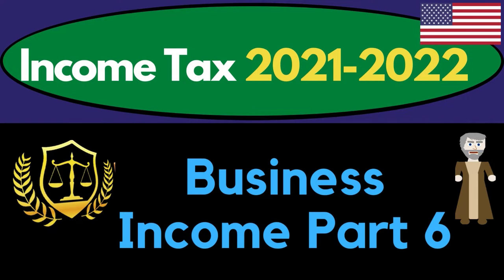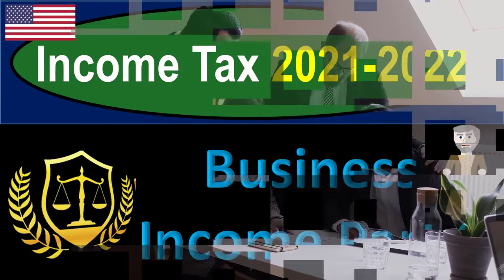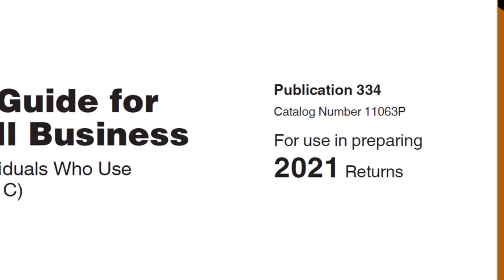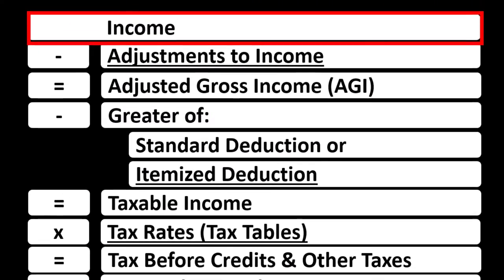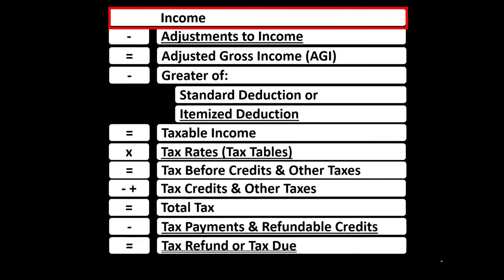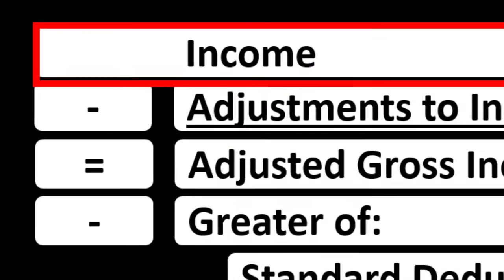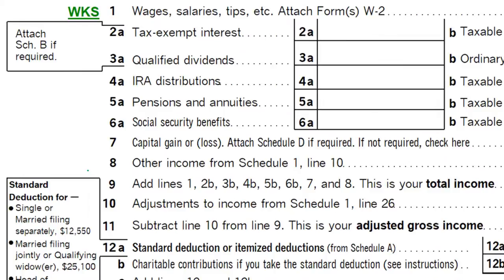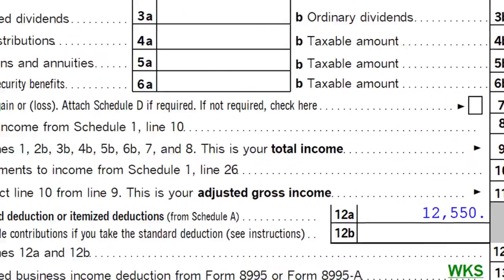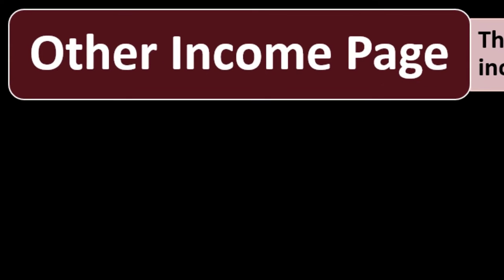Welcome to Income Tax 2021-2022 Business Income Part 6. Most of this information can be found in Publication 334, Tax Guide for Small Business, Tax Year 2021. The Income Tax Formula Line 1 Income has a subledger supplementing it, which contains an income statement with income and expenses — expenses being deductions — with the net rolling into Line 1. On page 1 of Form 1040, Schedule C rolls into Schedule 1, which rolls into Line 8 of the 1040. Schedule C is the profit or loss from business, essentially an income statement.